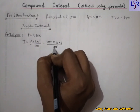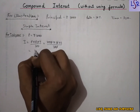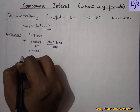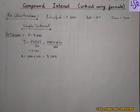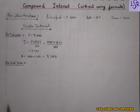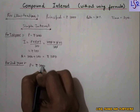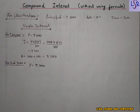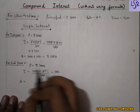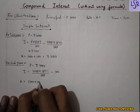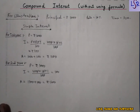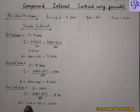Dividing by 100, we get interest as 100 rupees, and the amount will be 1000 plus 100 equals 1100. For the second year, the principal remains the same at 1000 rupees, interest is again 100 rupees, and the amount becomes 1200. For the third year, the principal is again 1000 rupees, interest is 100 rupees, and the amount equals 1200 plus 100, that is 1300. So total simple interest over three years is 300 rupees.